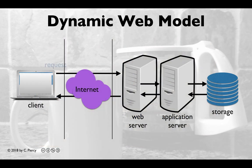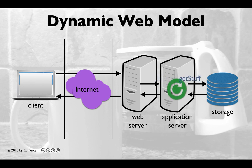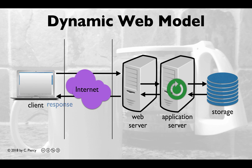In the dynamic web model, a client will make a request, which is sent over the internet to the web server. The web server will determine which application to run, and will request that the application do stuff. At some time while the application is processing, it may access storage to get any relevant stuff it needs to complete the processing. Data can be returned from storage, and then the application will create its output. The output will be passed back to the web server, which will in turn use the output to create a response to be sent back to the client. The browser will receive the response and render the results.